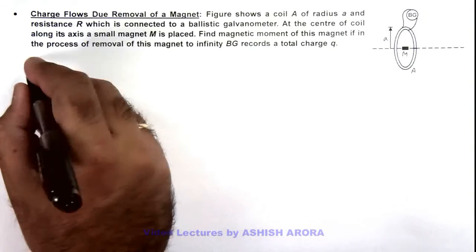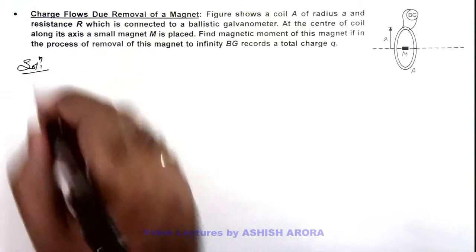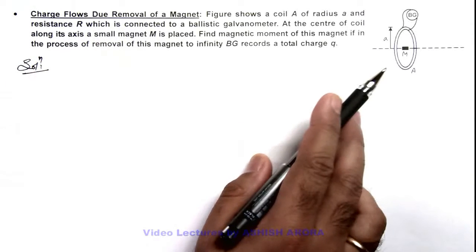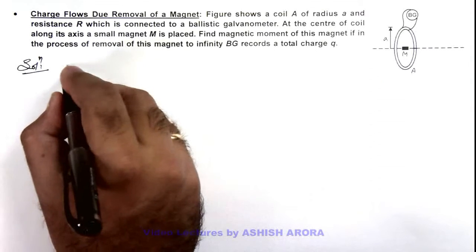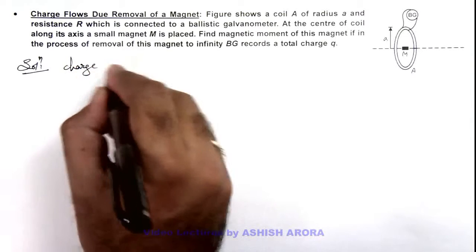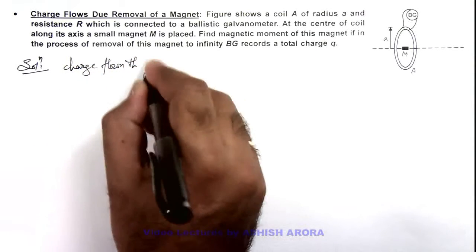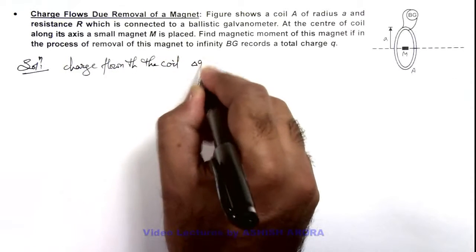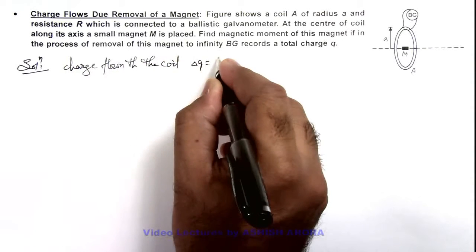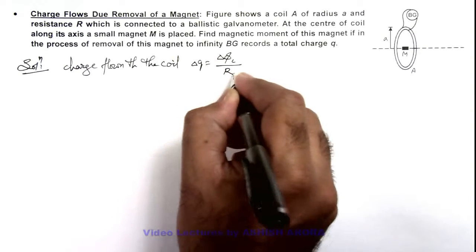In this situation, we know well that when a coil has some magnetic flux passing through it, then on changing the magnetic flux, the charge flown through the coil can be written as: delta q is equal to the total change in the linked magnetic flux divided by the resistance.